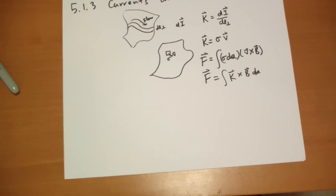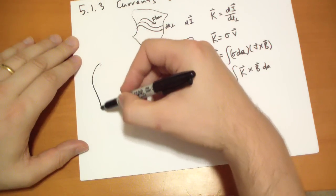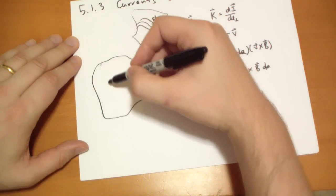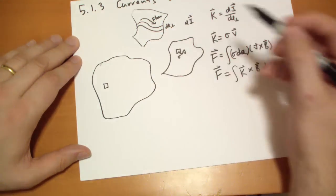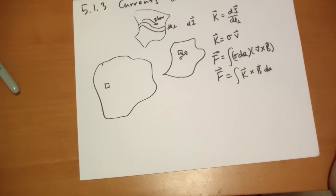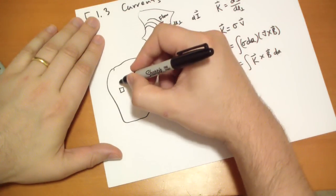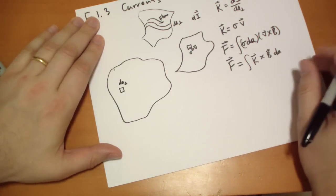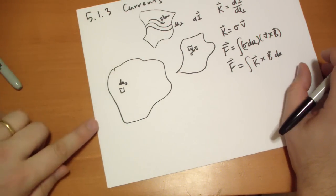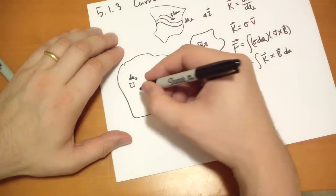For volume currents, we have some arbitrary volume, and then we're going to take an area that's perpendicular to the surface, the current flow, so this is dA perp. And there's a certain amount of current, dI, flowing through there.